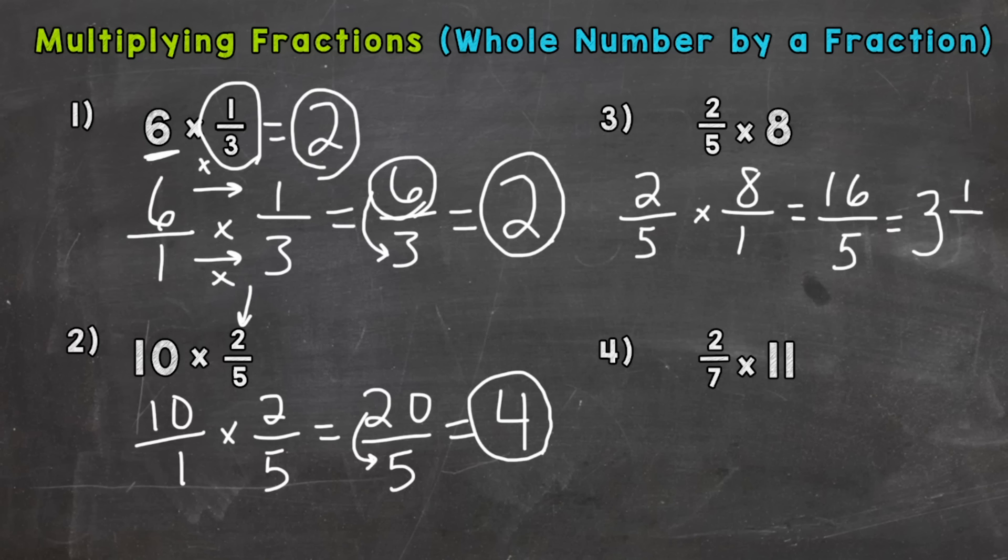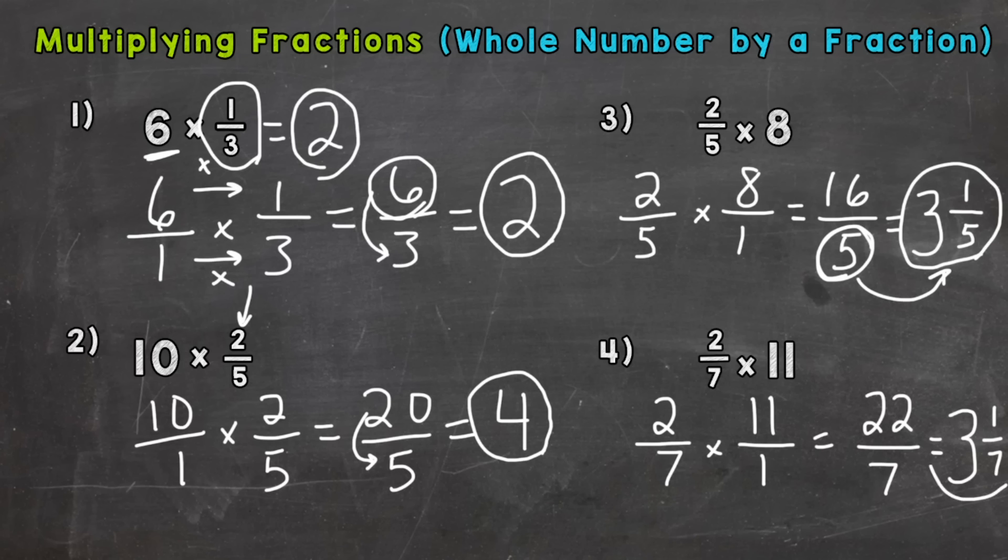Number four, 2/7 times 11. Put it over one. 2 times 11 is 22, 7 times 1 is 7. So again an improper fraction, so we need to do 22 divided by 7, which is three and we get a remainder one and keep the denominator the same. So three and one-seventh. Again we did 22 divided by 7 and got three wholes with a remainder one here and we keep the denominator the same.